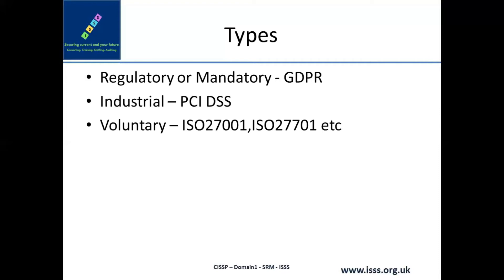Whenever there is a mandatory compliance in place, it is always better to first go for voluntary compliance and get assessed, because in voluntary compliance there is no penalty — only non-conformities that you can address with corrective actions. Then when you proceed to the mandatory compliance assessment, your voluntary certification is already in place. Getting a certification through a globally recognized body like TÜV SÜD, DQS, or BSI UK adds international value to your certificate.